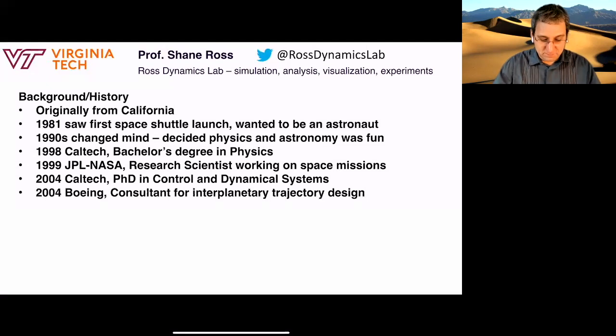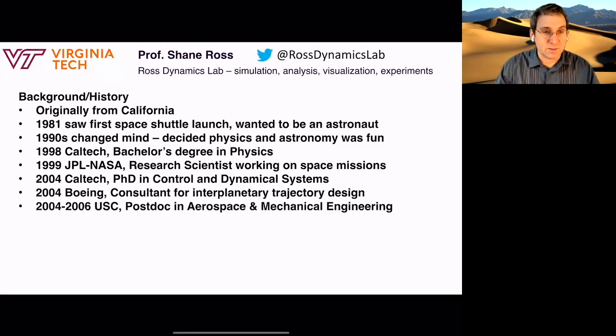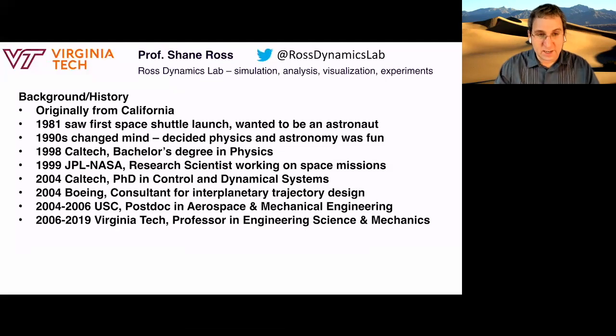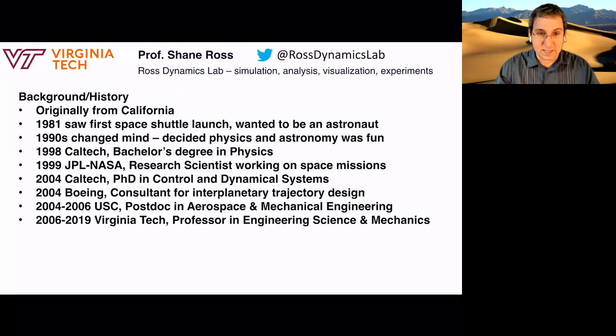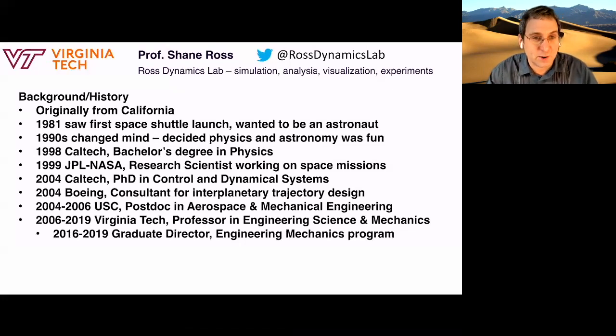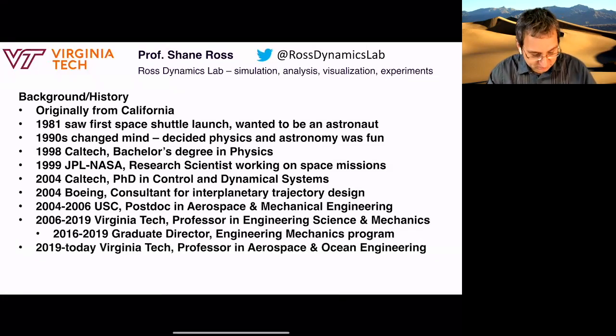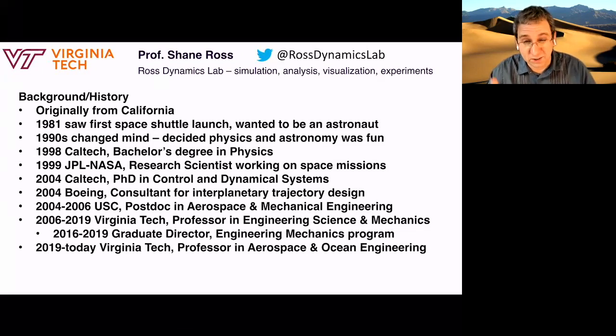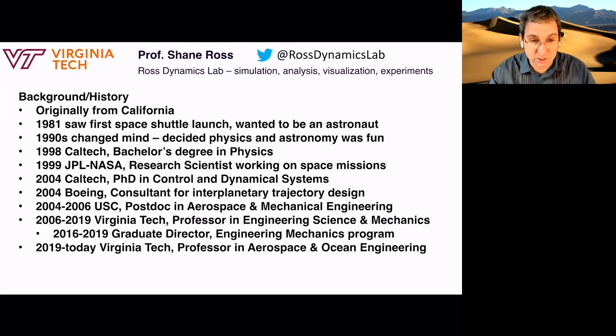I was a consultant for interplanetary trajectory design from Boeing in 2004. Then I was a postdoc in aerospace and mechanical engineering at USC, University of Southern California in Los Angeles. Then I came to Virginia Tech, got a job in engineering science and mechanics. After I was graduate director for the engineering mechanics program, I became a professor in aerospace and ocean engineering. I'm also an affiliate in mechanical and math. My PhD advisor was a mathematician, Gerald Marsden.